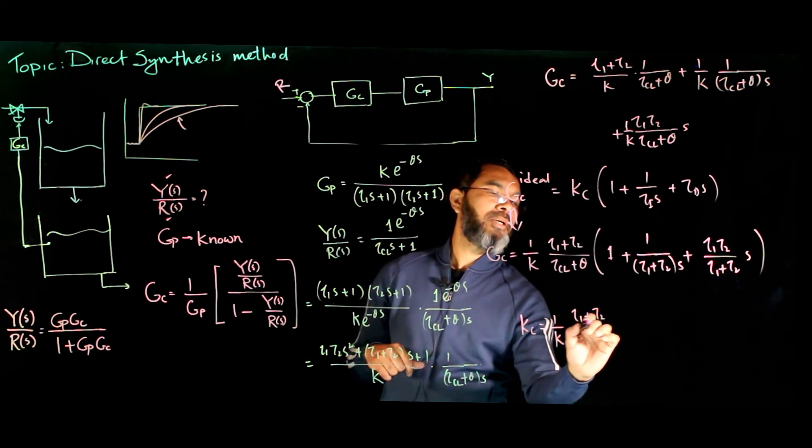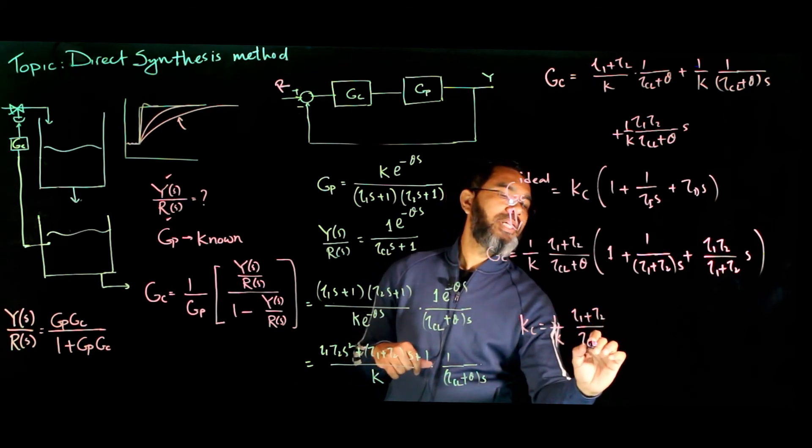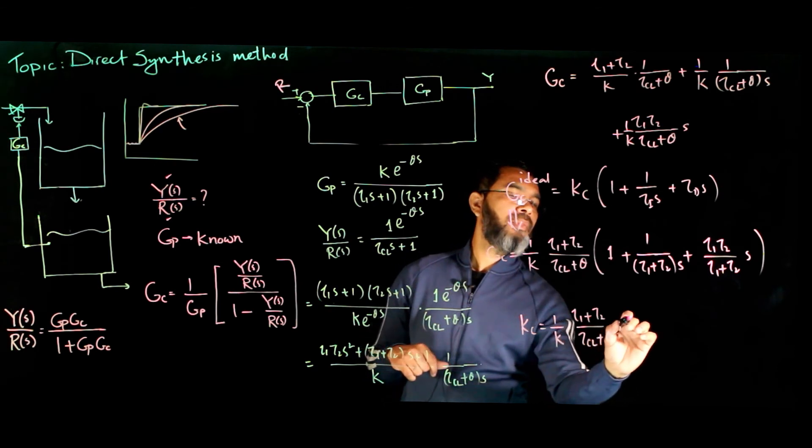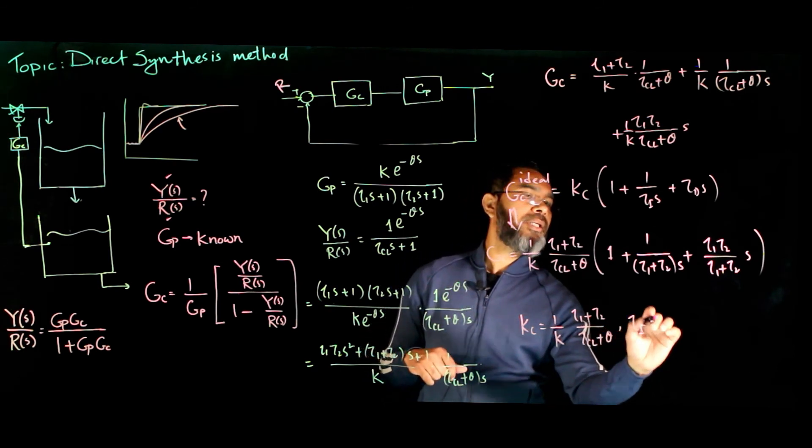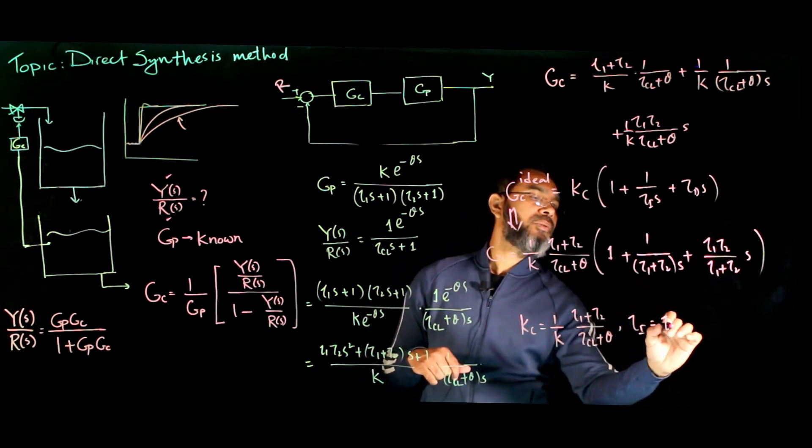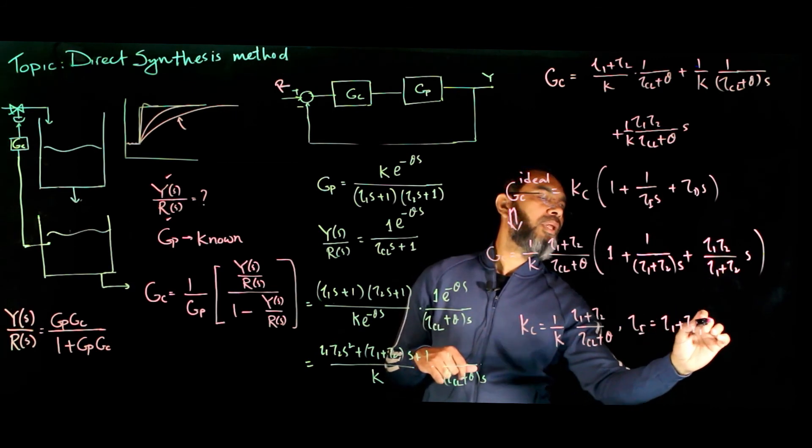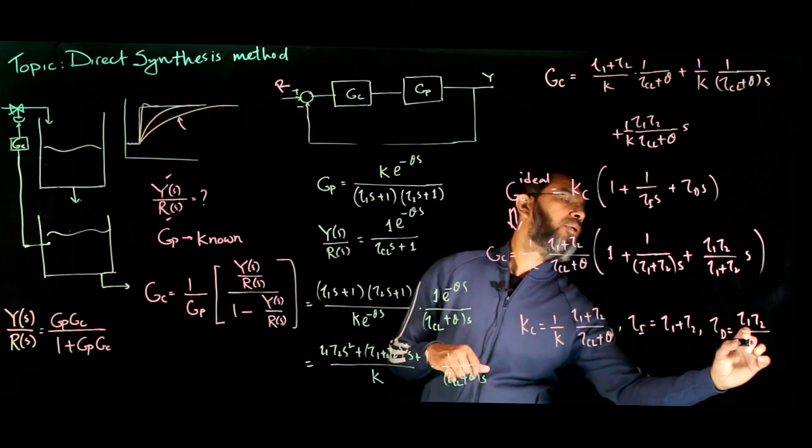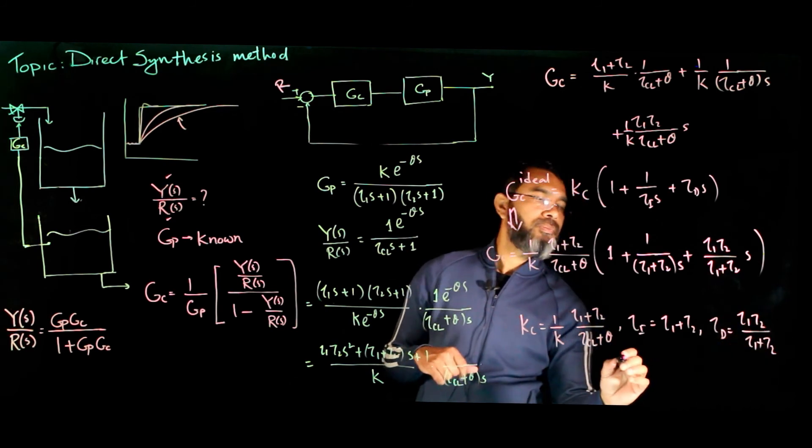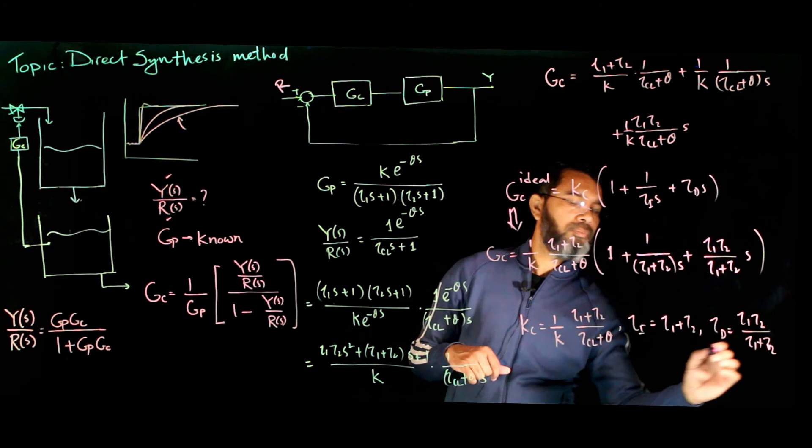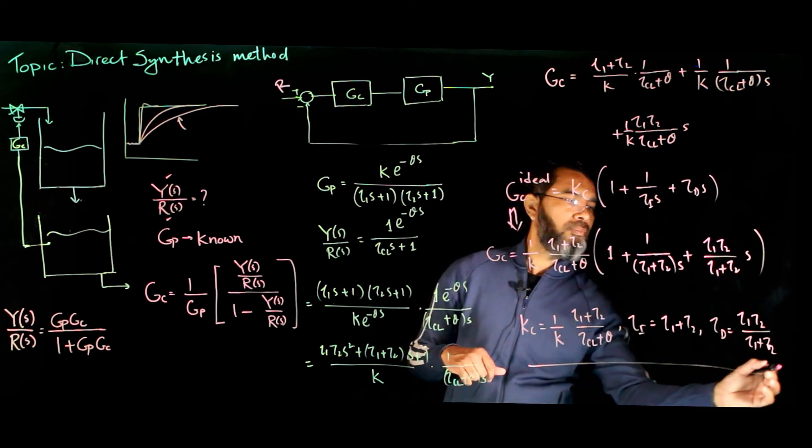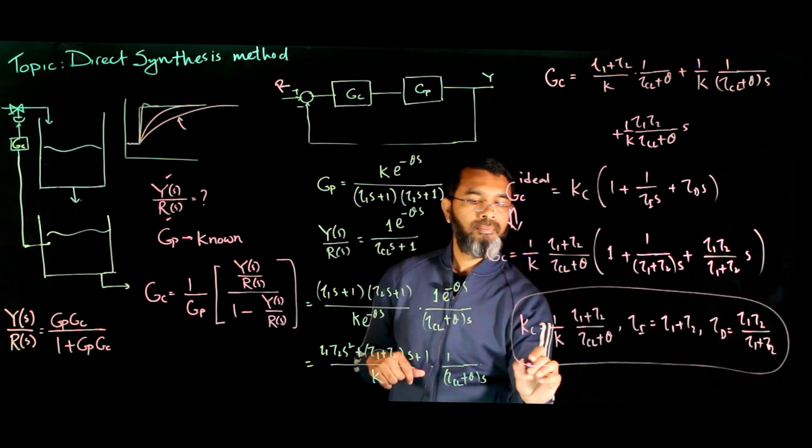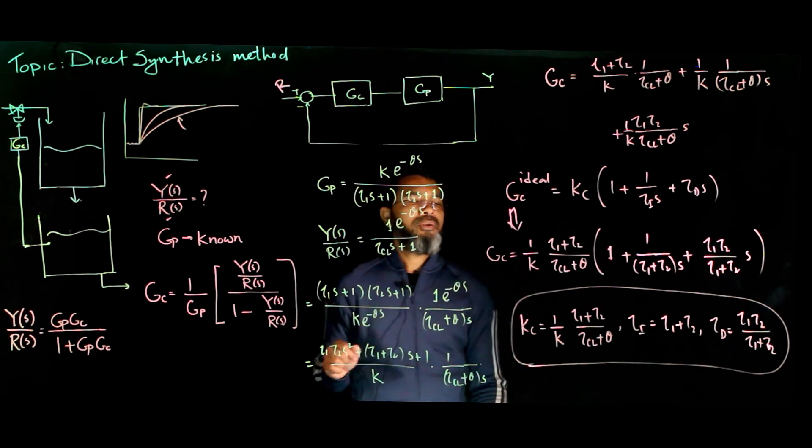Now if we compare these two, we get kc to be 1 over k times tau 1 plus tau 2 over tau cl plus theta, tau i to be tau 1 plus tau 2, and tau d to be tau 1 tau 2 over tau 1 plus tau 2.